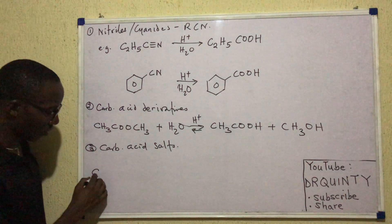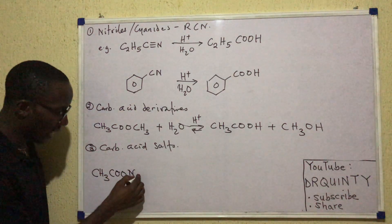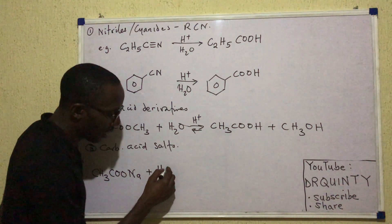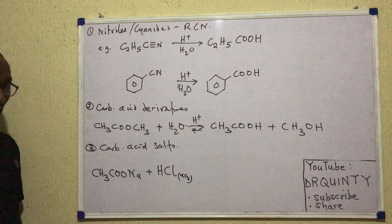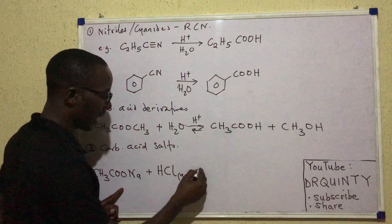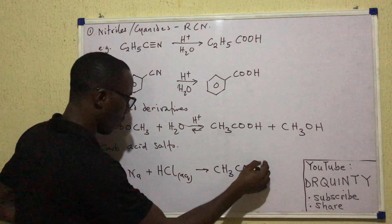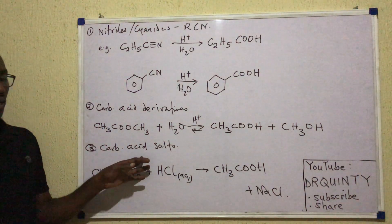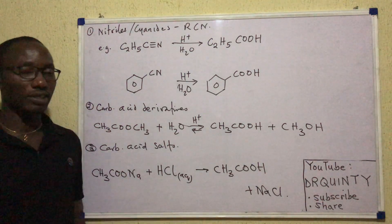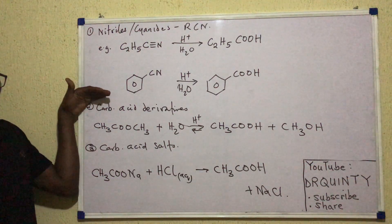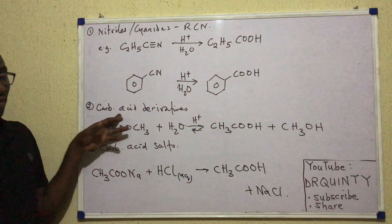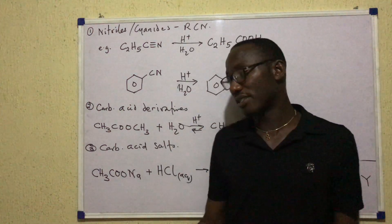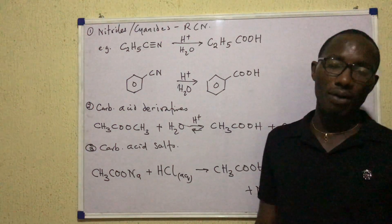Even the salts of alkanoic acids can be hydrolyzed to produce carboxylic acids. Acid hydrolysis of a carboxylic acid salt gives us the acid — for example, CH₃COONa acted upon by HCl gives CH₃COOH plus NaCl. Hydrolysis of carboxylic acid derivatives and salts are less popular methods but clearly also yield alkanoic acids.